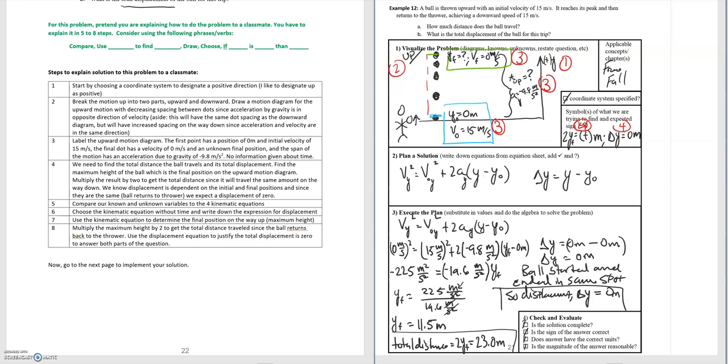Moving on to step 5 compare our known and unknown variables to the four kinematics equations. And then step 6 choose the kinematic equation without time and write down the expression for displacement. So here we're just looking at all the information we're given and what we're given and what we want to determine. And then based off of that we choose the equation without time which is the equation that we have listed here. So this is step 5 and 6.